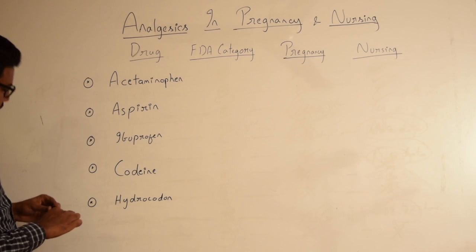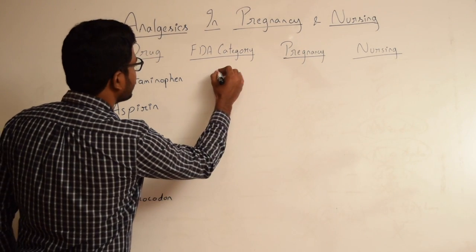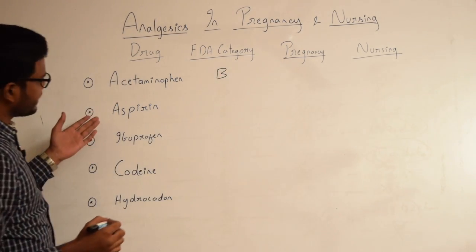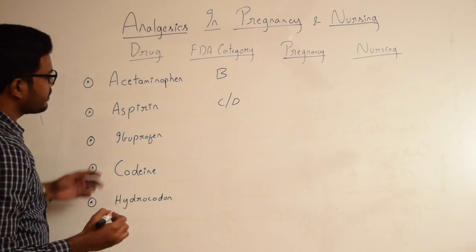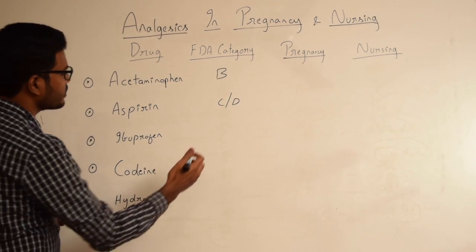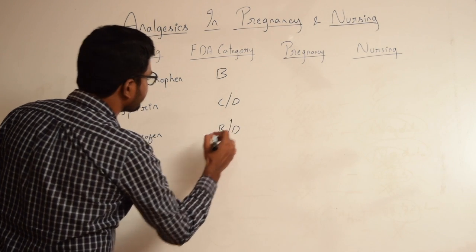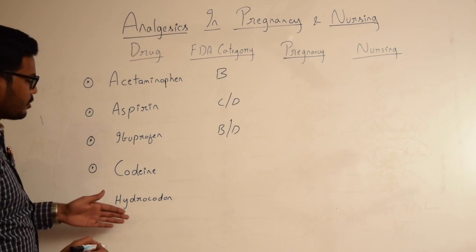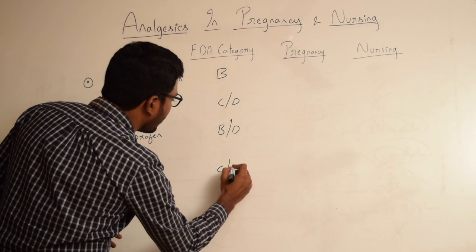Acetaminophen or paracetamol belongs to FDA category B, whereas aspirin belongs to FDA category C or D. Ibuprofen and other NSAIDs belong to FDA category B or D. And codeine and hydrocodone, narcotic analgesics, belong to FDA category C or D.